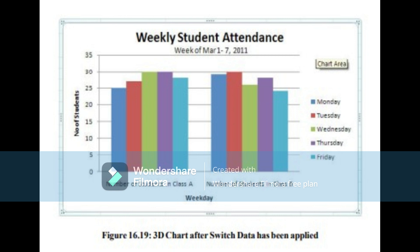16.7.2.6 Change Chart Type, Chart Style or Data Range. You can use the design context tab to change chart type, chart style or data range. Select the Design tab and choose the commands as per your requirements. Click on Change Chart Type from the type group and select the required type from the dialog box that opens. Click Select Data command from the data group to change the data range.